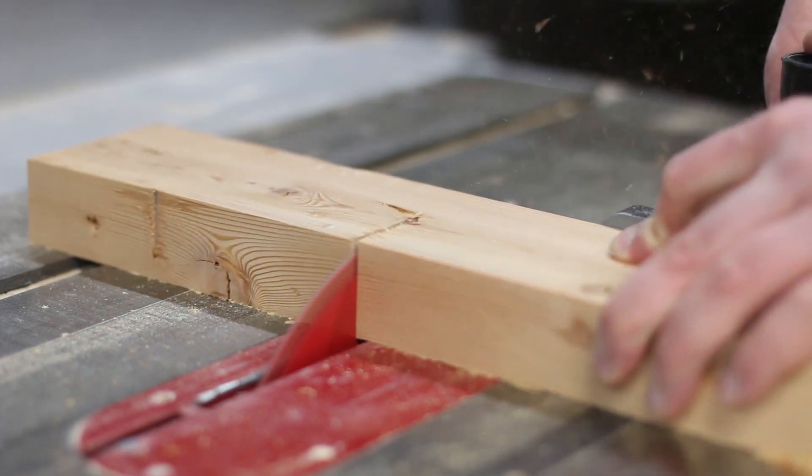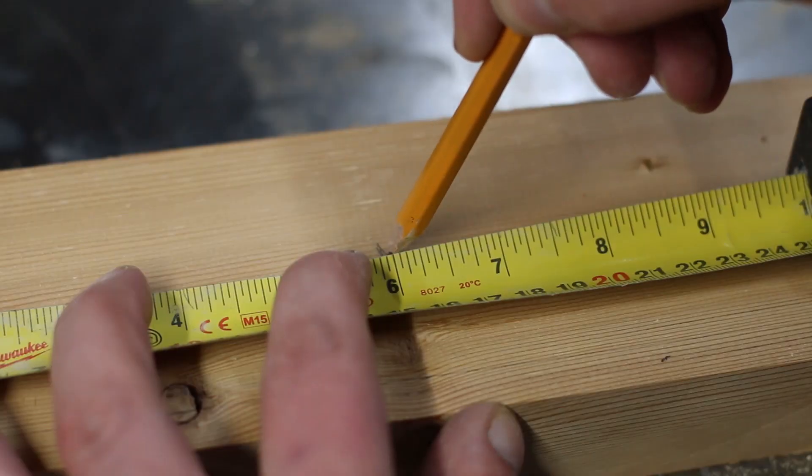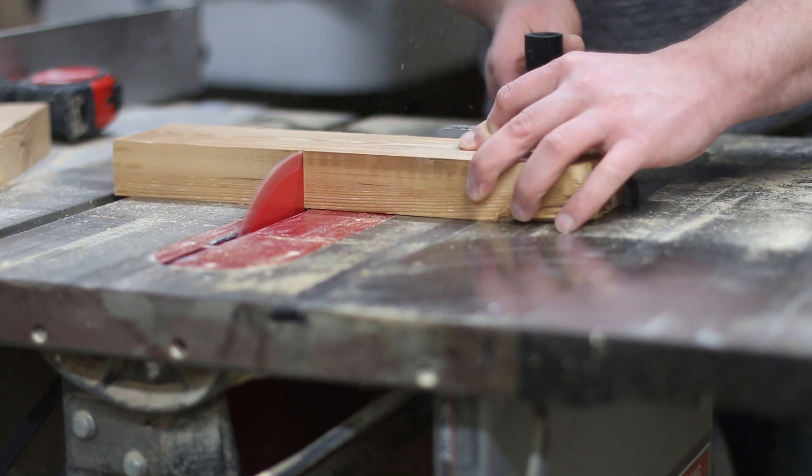I used the miter gauge to square up the end of the 2x4, and then after measuring the piece, I went back and cut it to a final length of 6 inches.